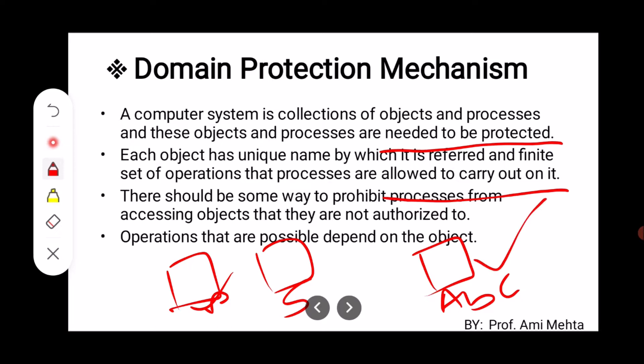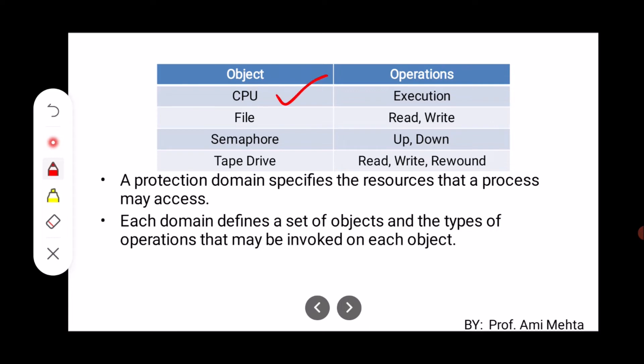We can use a file for reading, writing, appending, or executing. For a printer we have the print operation; for a scanner we have the scan operation. These are the set of operations that processes are allowed to carry out. There should be some way to prohibit processes from accessing objects that they are not authorized to — for example, ensuring file 'abc' cannot be executed by anyone and must remain in read and write form only.